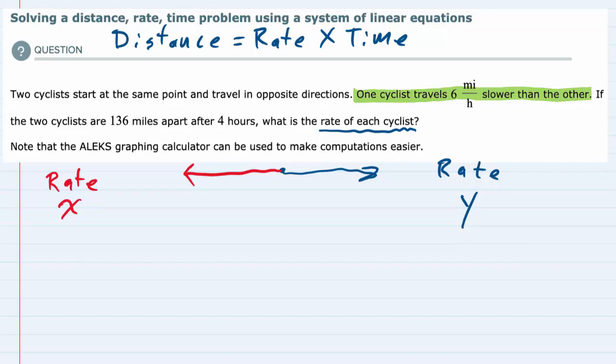So we can say that rate x here is equal to the rate of y minus 6. So in this case I've got the first cyclist going 6 miles per hour slower than the second cyclist.